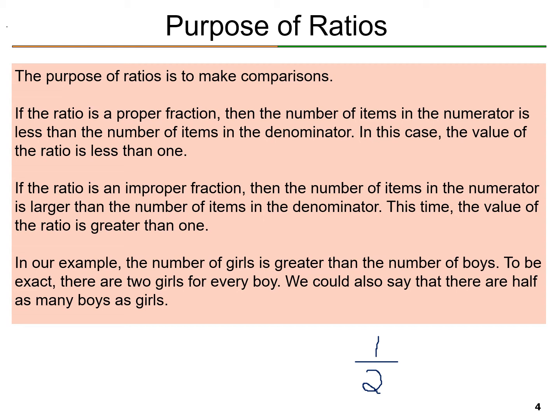Now if the ratio is an improper fraction, then the number of items in the numerator is larger than the number of items in the denominator. This time, the value of the ratio is greater than 1. For example, 7/3 is an improper fraction because the numerator is 7 and is larger than the 3 in the denominator.